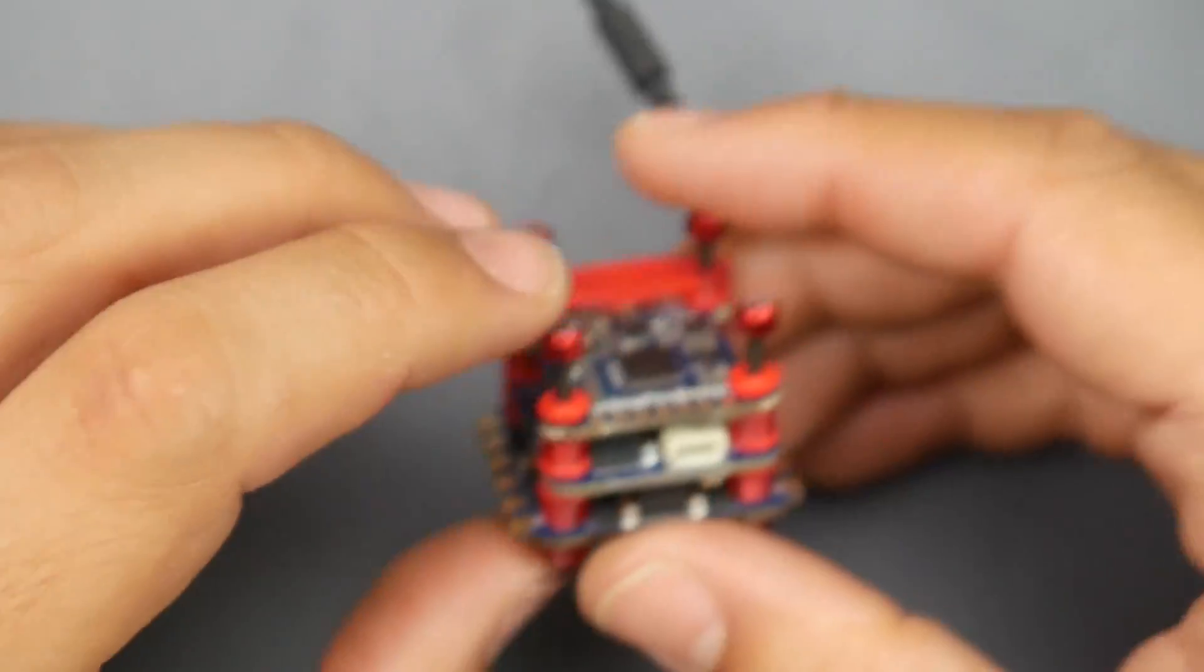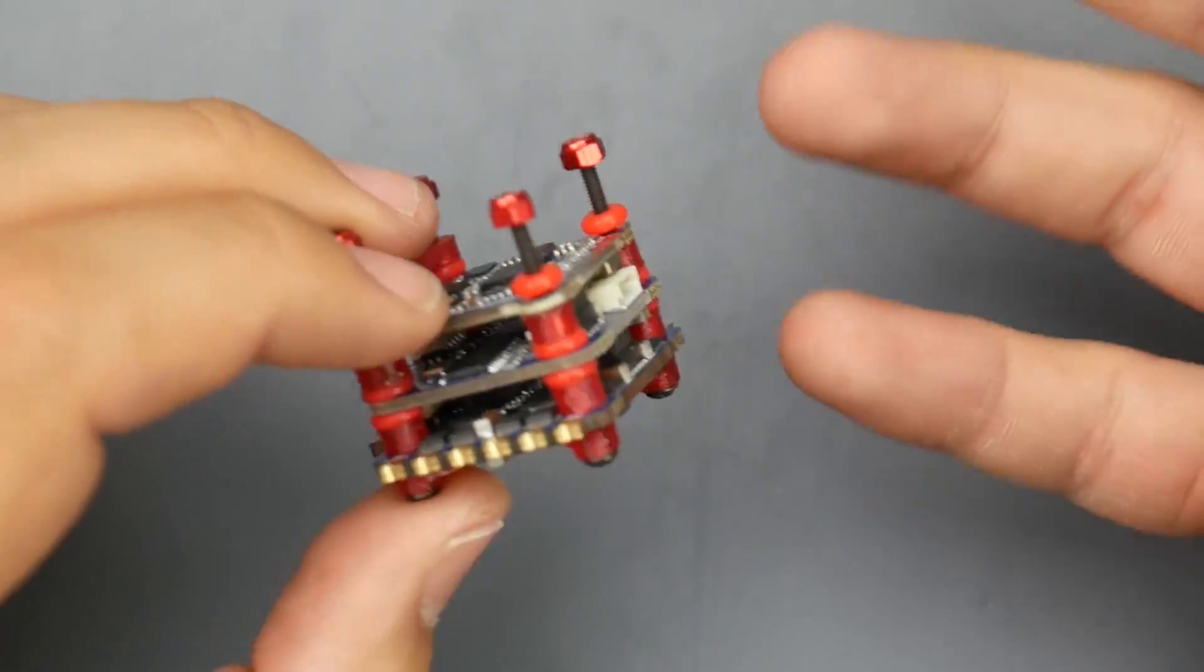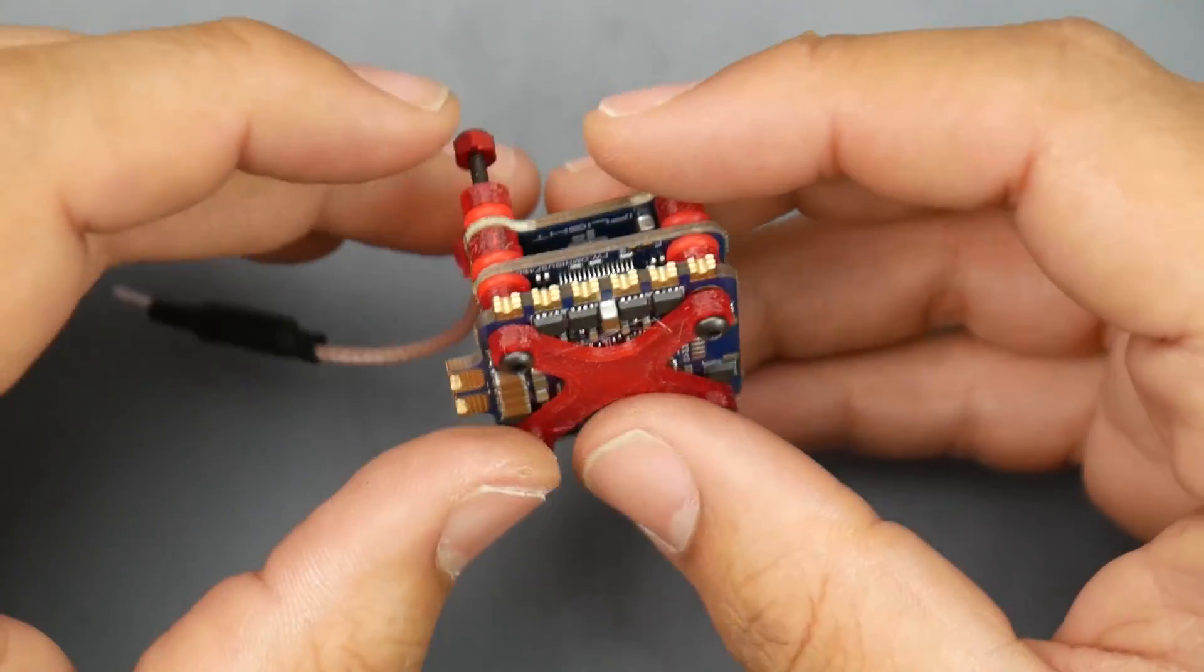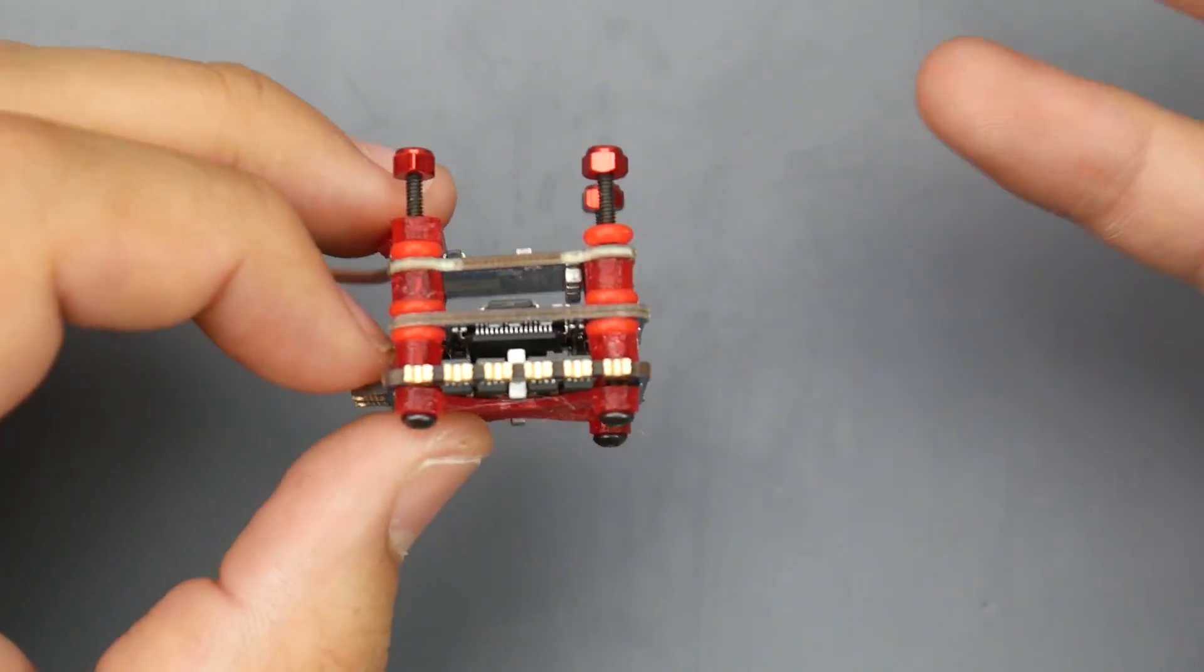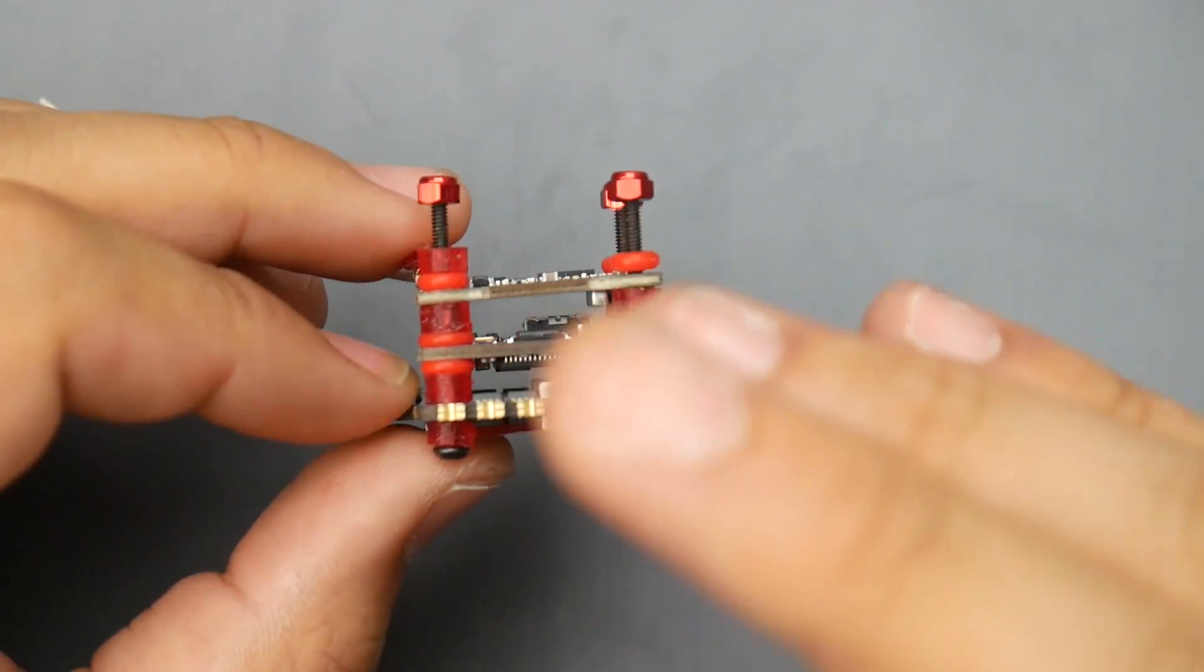Now the ESC is pretty interesting. It's rated up to 6S as they're stating and it can handle 35 amps to a 45 amp burst. So 35 amp constant current, that's pretty insane.